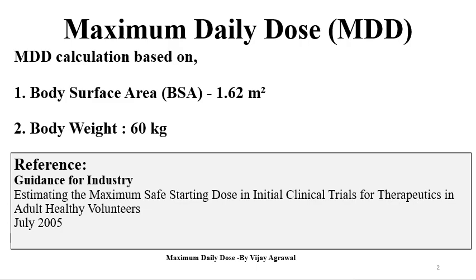The Maximum Daily Dose is calculated mainly based on body surface area and body weight. Generally, a body weight of 60 kg is considered the normal body weight of a healthy human being, and a body surface area of 1.62 m² is considered for a normal healthy human being. The reference is taken from the FDA Guidance for Industry on estimating the maximum safe starting dose in initial clinical trials for therapeutics in adult healthy volunteers, published by USFDA in July 2005.